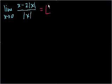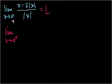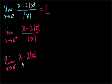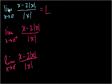In order for the limit to equal l, the limit as x approaches 0 must exist from both the positive and negative sides. The limit as x approaches 0 from the right of x minus 2 times the absolute value of x over the absolute value of x must equal l, and the limit as x approaches 0 from the left of the same function must also equal l. If both one-sided limits agree, we have our answer.